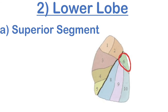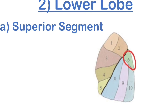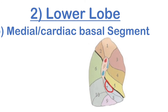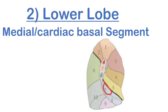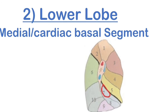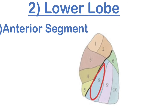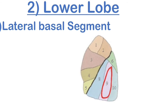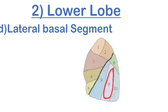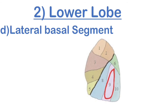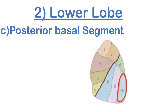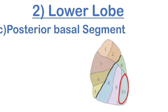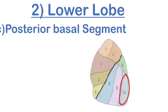For the lower lobe of the left lung: the first segment is the superior segment, next is the medial or cardinal basal segment, then the anterior segment of the lower lobe, then the lateral basal segment as it is present laterally to the lung, and the last segment is the posterior basal segment, as it is present posteriorly to the surface of the lungs.